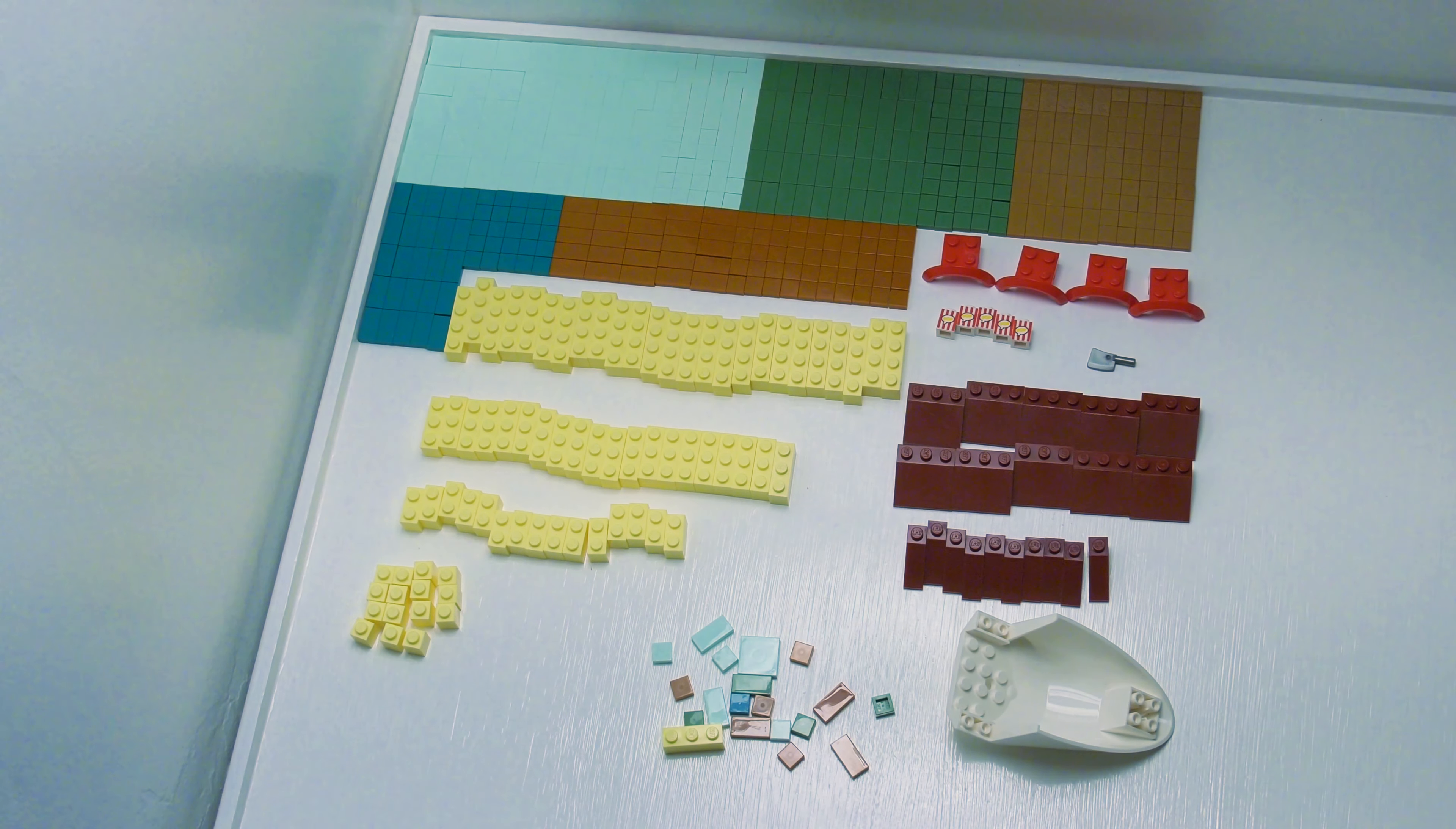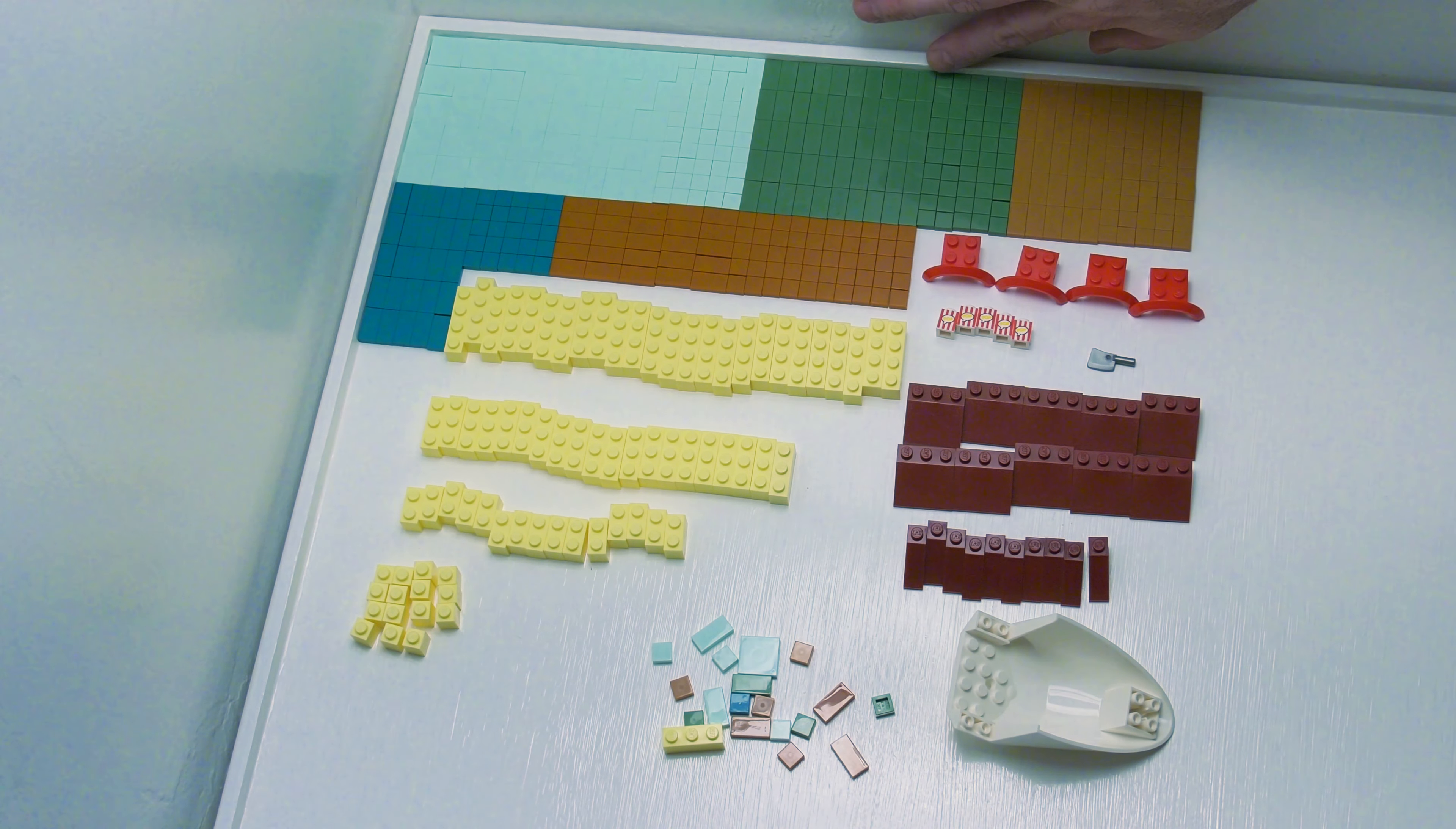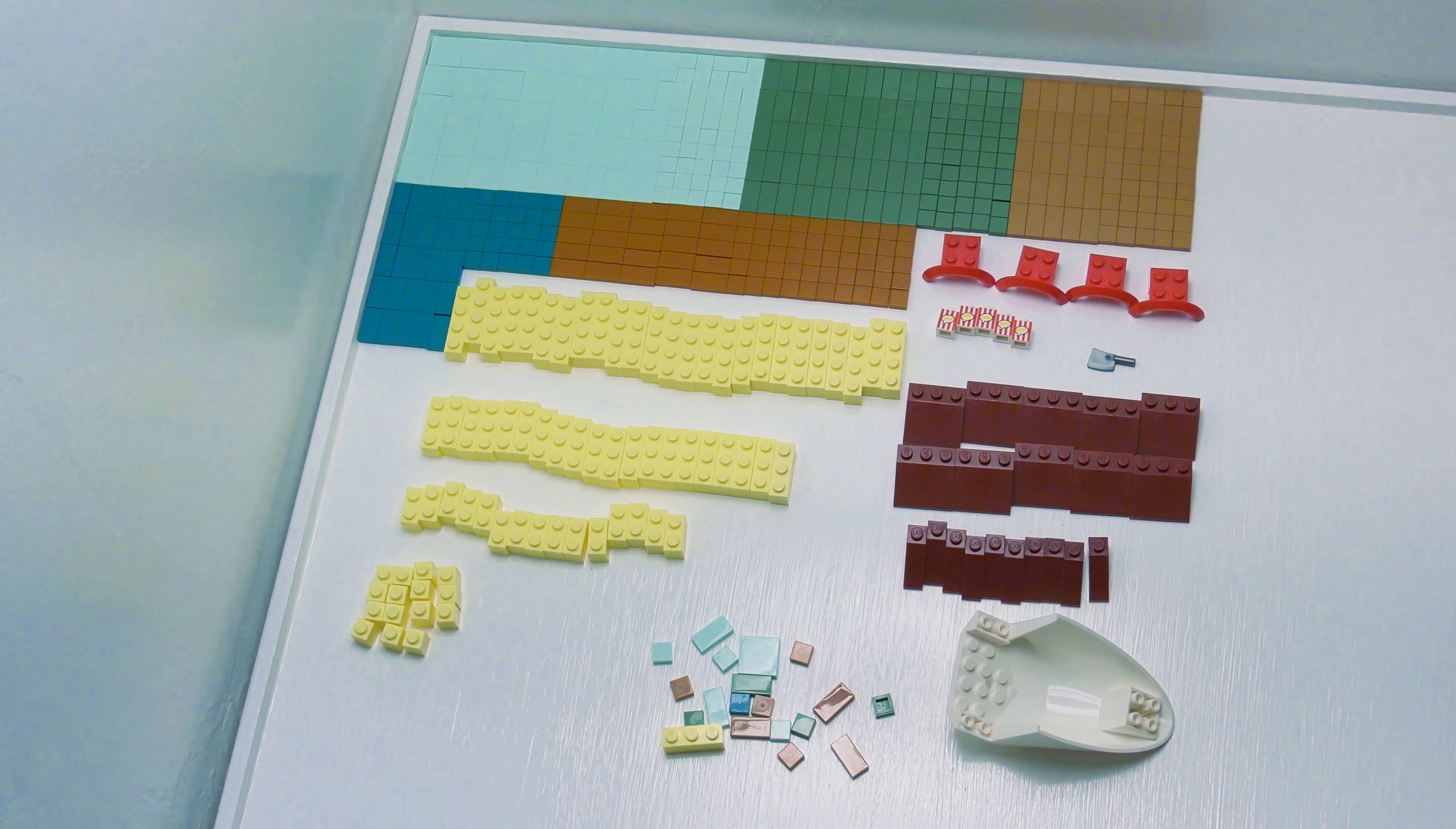So in the top left I do have some 1 by 1, 1 by 2 and 2 by 2 aqua blue flat tiles. I do have some sand green 1 by 1s and 1 by 2s, medium nougat 1 by 1 and 1 by 2s, dark orange 1 by 1 and 1 by 2s, and teal 1 by 1 and 1 by 2 flat tiles.